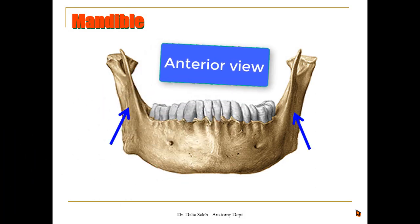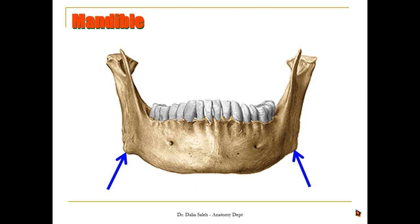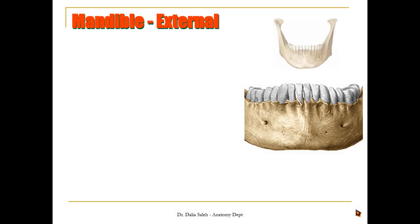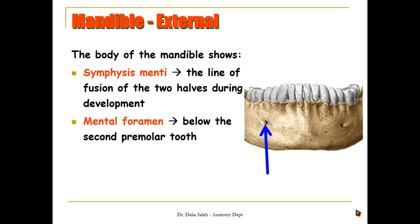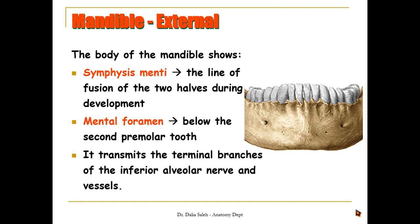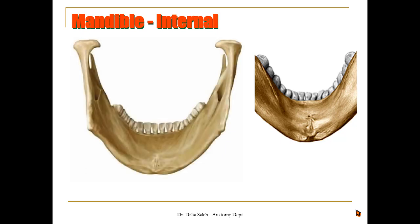If we look at the outer surface of the body of the mandible, we can see in the midline the junction between the two halves of the mandible — we call it the symphysis menti. 'Symphysis' means joint and 'menti' means chin. We can also see a foramen called the mental foramen, which lies below the second premolar tooth. From this foramen, the terminal branches of the inferior alveolar nerve and vessels exit, called the mental nerve and vessels, which supply the skin of the chin area.